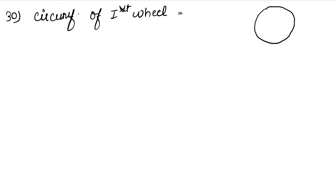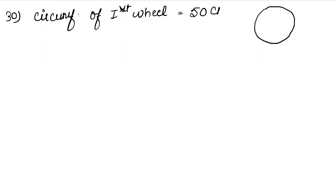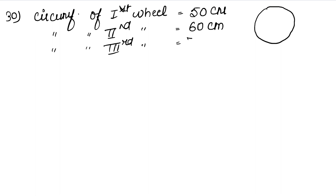The circumference of the first wheel is 50 cm, the second wheel is 60 cm, the third wheel is 75 cm, and the fourth wheel is 100 cm. We need to find a number that is divisible by all of them — so we find the LCM of 50, 60, 75, and 100.